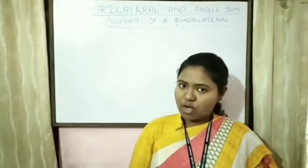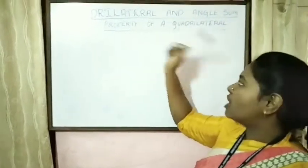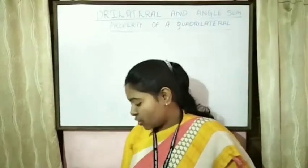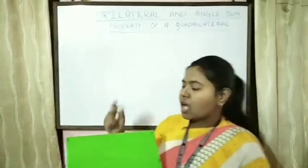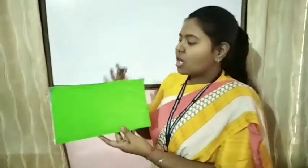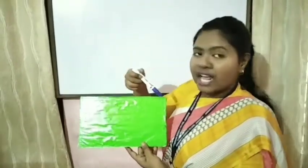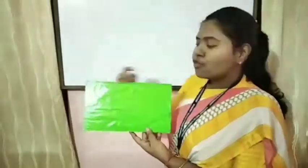Our today's topic is quadrilaterals and the angle sum property of quadrilaterals. A quadrilateral is a four-sided, closed, two-dimensional figure. A quadrilateral has four vertices — A, B, C, and D — four sides, and four angles.